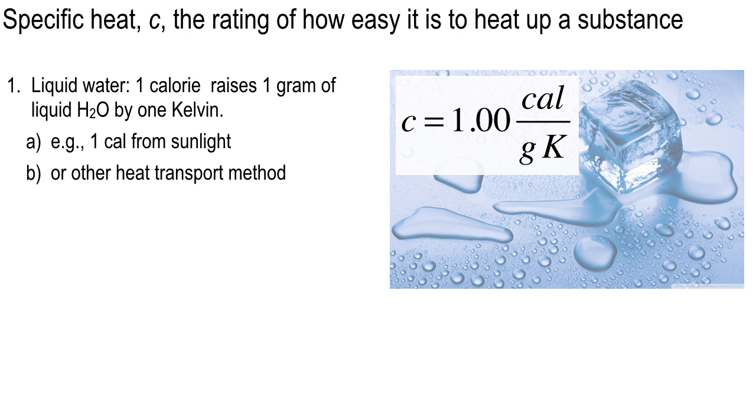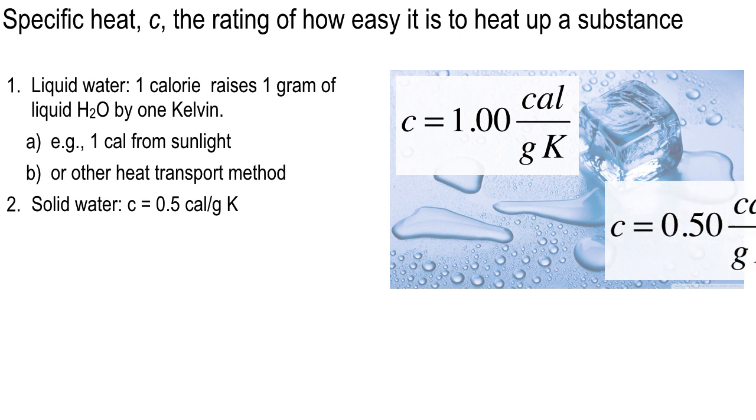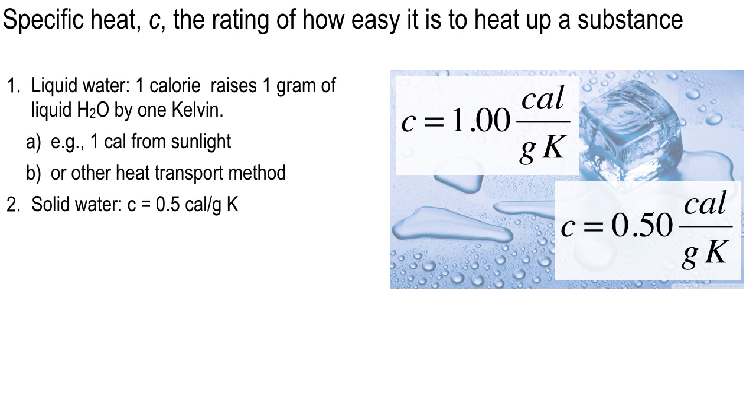For liquid water, you need one calorie, whether it's from sunlight or your cookout grill, your charcoal briquettes. Whatever your heat source is, it's one calorie per gram. Solid water is lower. For solid water, in other words H2O ice, it's 0.50 calories per gram Kelvin. And that means that to raise one gram of H2O ice by one Kelvin, you need half a calorie.